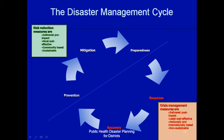In regard to the disaster management cycle, we have seen that starting from prevention, mitigation and preparation, these are termed as risk reduction measures. The other phases, which are response and recovery, these are crisis management measures.